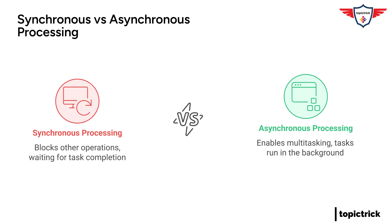What about asynchronous processing? Asynchronous processing basically means that tasks can happen in the background without blocking other operations. Think about that online order example — you don't have to sit there staring at your screen waiting for the order to be processed before you can do anything else. The system uses asynchronous processing to handle the order in the background while you're free to continue browsing. It's like multitasking for software, and message queues are often the backbone of this asynchronous magic.